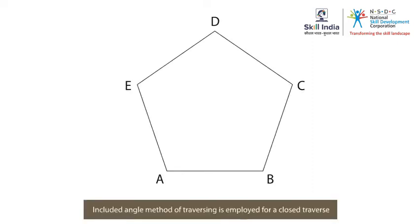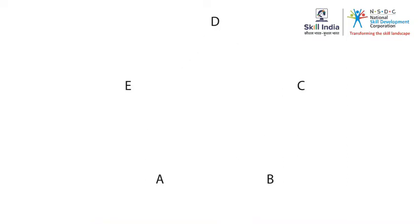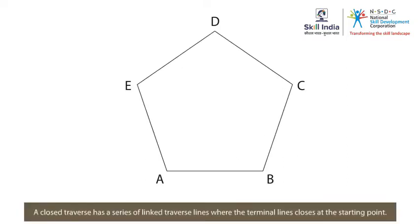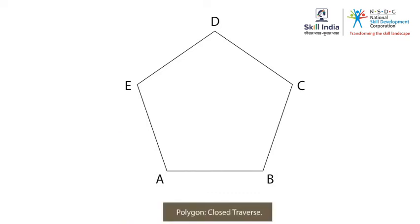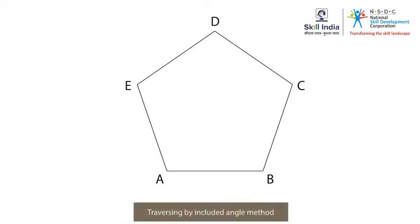The included angle method of traversing is employed for a closed traverse. A closed traverse has a series of linked traverse lines where the terminal line closes at the starting point. A polygon is an example of a closed traverse. Let us see how to perform traversing by the included angle method.